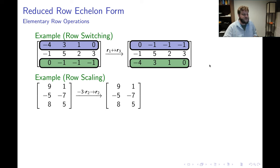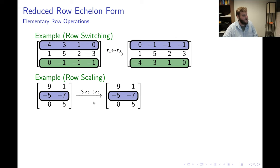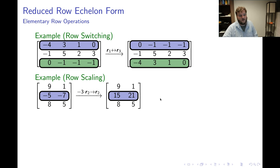There's also row scaling. Over here on the left I have a 3×2 matrix, and this notation says I'm about to scale row 2 by negative 3 to produce a new matrix. I identify row 2, multiply everything by negative 3, and that produces my new matrix.